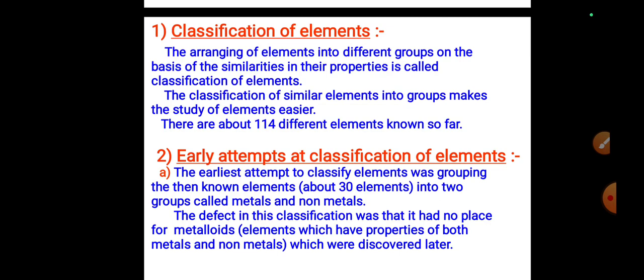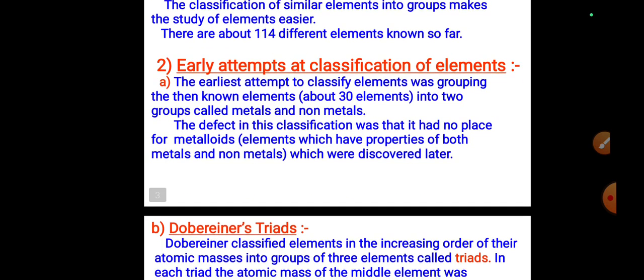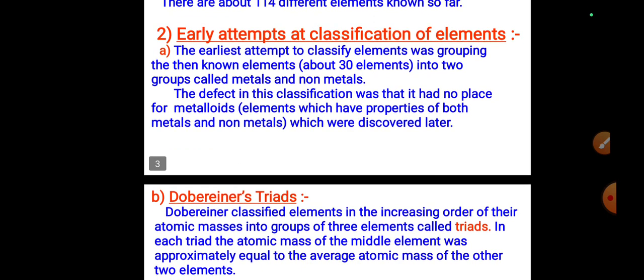There are about 114 different elements known so far. Early attempts at classification involved grouping the known elements — about 30 at the time — into two groups called metals and non-metals. The defect in this classification was that it had no place for metalloids, elements which have properties of both metals and non-metals, which were discovered later.